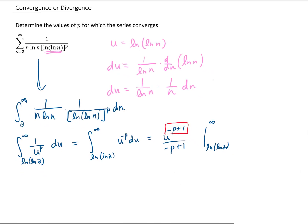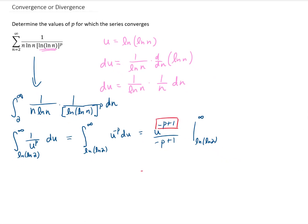So our requirement on this exponent is that negative p plus 1 be less than or equal to 0. Adding p to both sides tells us that 1 has to be less than or equal to p, or if it's written in a slightly nicer way we can just flip this thing around and say that p has to be greater than or equal to 1 for this integral to converge and thus for this series to converge.